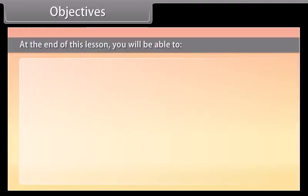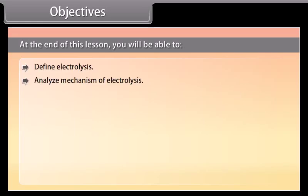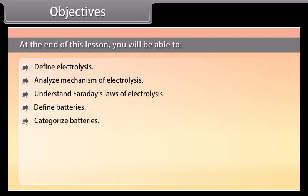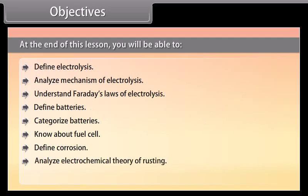Objectives. At the end of this lesson, you will be able to define electrolysis, analyze mechanism of electrolysis, understand Faraday's laws of electrolysis, define batteries, categorize batteries, know about fuel cell, define corrosion, analyze electrochemical theory of rusting, and explain prevention of corrosion.